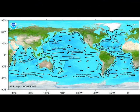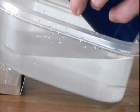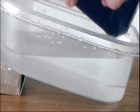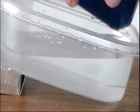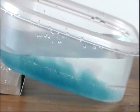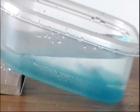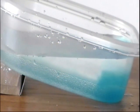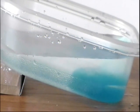Ocean currents are giant rivers that move through the oceans and are caused because of two major reasons. First is the difference in ocean water density. The saltier and colder water is, the more dense it becomes, and it pushes on warmer and less salty water. This causes currents to flow from the equator to the north and south poles. These currents are called thermohaline currents, or warm, salty currents.